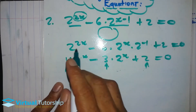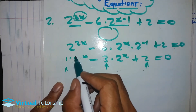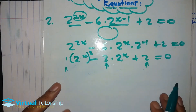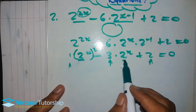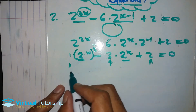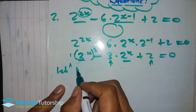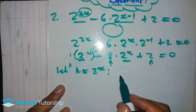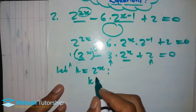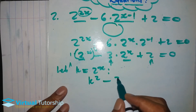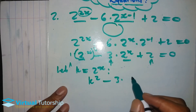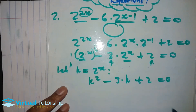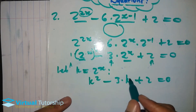So we can rewrite this as: 2 exponent x, everything in brackets, squared. So now we're building a quadratic equation. I can represent this as k equal to 2 exponent x, and then k squared minus 3 times k plus 2.